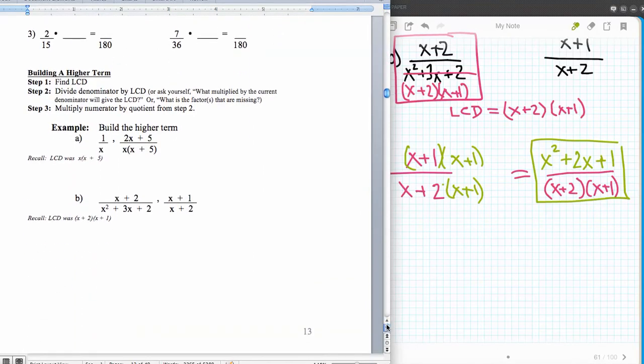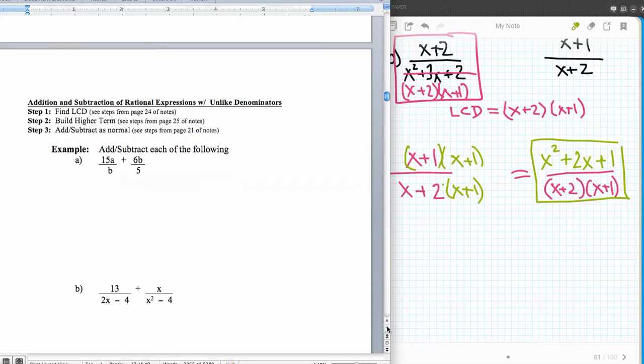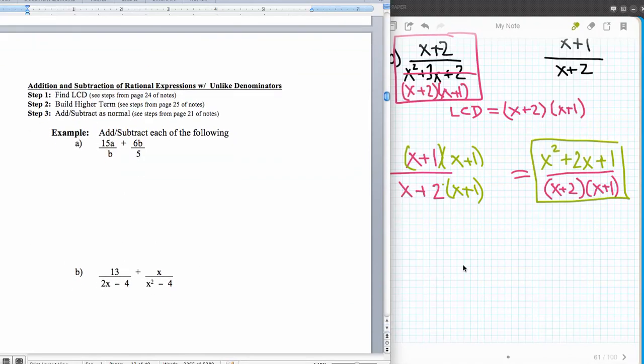And we're going to be adding two fractions that have unlike denominators. So adding and subtracting rational expressions with unlike denominators. And we're going to use our notes from above, finding the least common denominator, and then building the higher terms. And then we're going to be doing adding and subtracting. And so we'll come back in the next video and we'll do that.